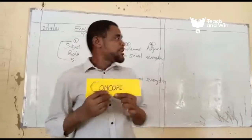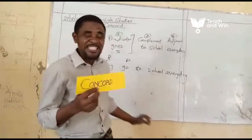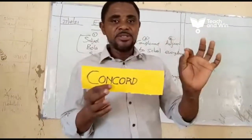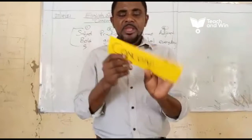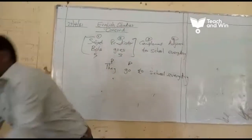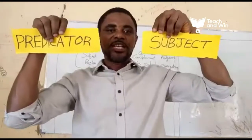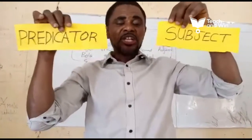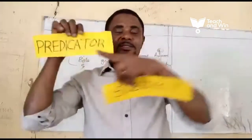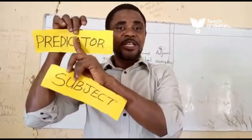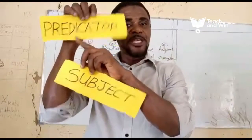Similarly, under complement, we have the same thing. The predicator is purely verbs, while adjuncts are adverbs. This is subject and this is predicator — there must be an agreement between them. Concord is so simple. The rule says that when the subject is singular, the verb that follows under predicator must be singular, and when it is plural, the verb that falls under must be plural.